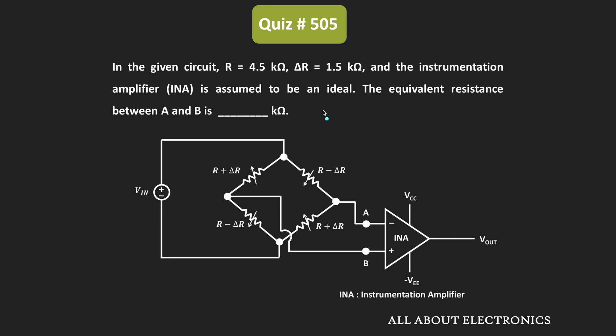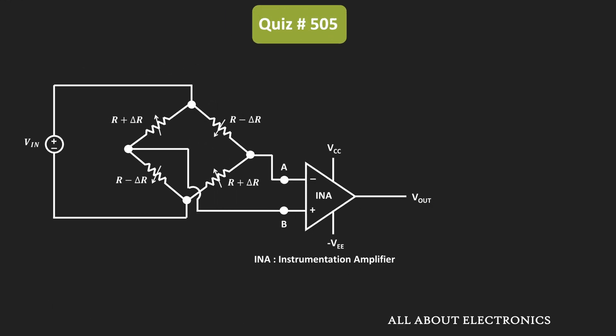The given instrumentation amplifier is the ideal one. We have been asked to find the equivalent resistance between the terminal A and B. Since the instrumentation amplifier is ideal, no current is flowing into these two terminals.